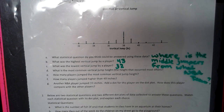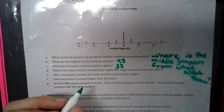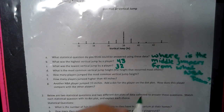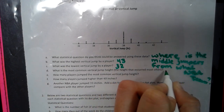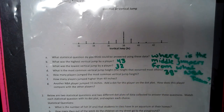So what is the most common vertical jump — the height that occurs the most? When you're looking at a dot plot to see which one represents the most, you are looking for the tallest stack of dots. The tallest stack is not necessarily in the middle; you're just looking for the one that's the tallest. And if we look at this data set, we see that the most common would be the 38-inch jump.